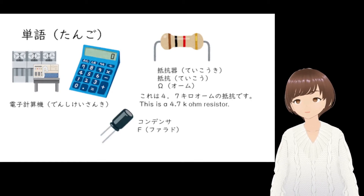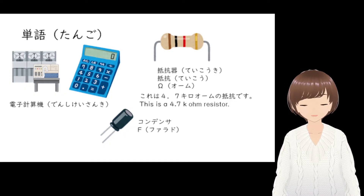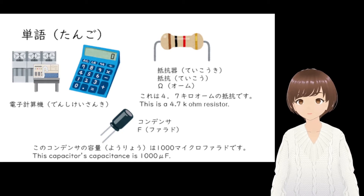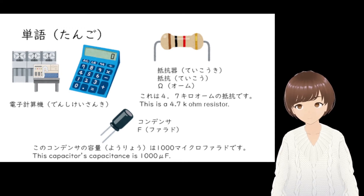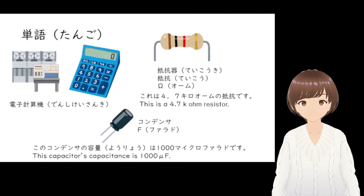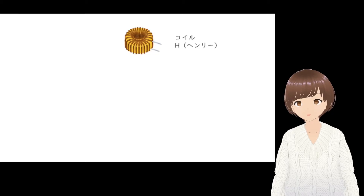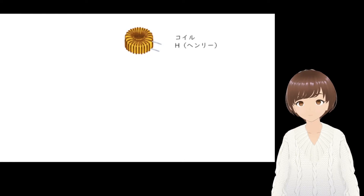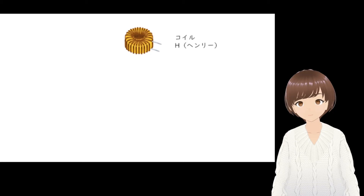Capacitor is kondensa, and the unit for measuring capacitance is pronounced as faraddo. For example: kono kondensa no youryou wa sen mikrofarad desu — 'The capacitor's capacitance is 1000 microfarad.' Good news is that coil is koiru. The unit for measuring inductance is henri. When writing the unit in Japanese, you notice there's a long sound at the end, but actually no one writes this in katakana — they just use H.